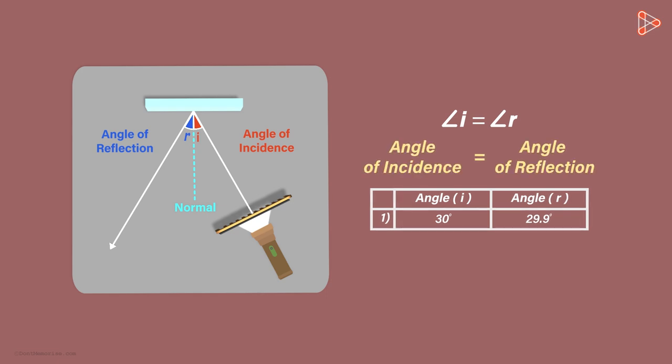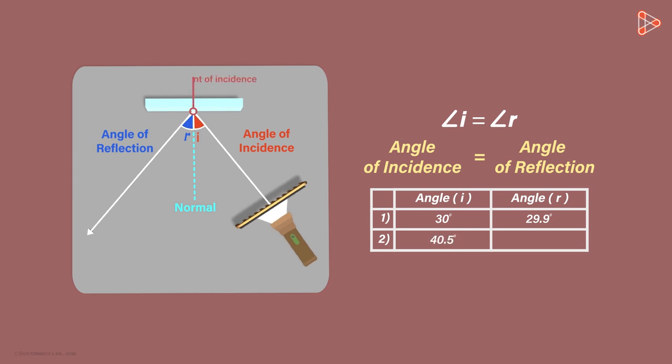So with this experiment, you can verify this law. Well, if you are still not convinced, you can take further readings by changing the direction of the incident light. Change this angle of incidence by moving the comb slightly. Make sure that the point of incidence is the same in both cases. That is, this point here is same as it was previously.